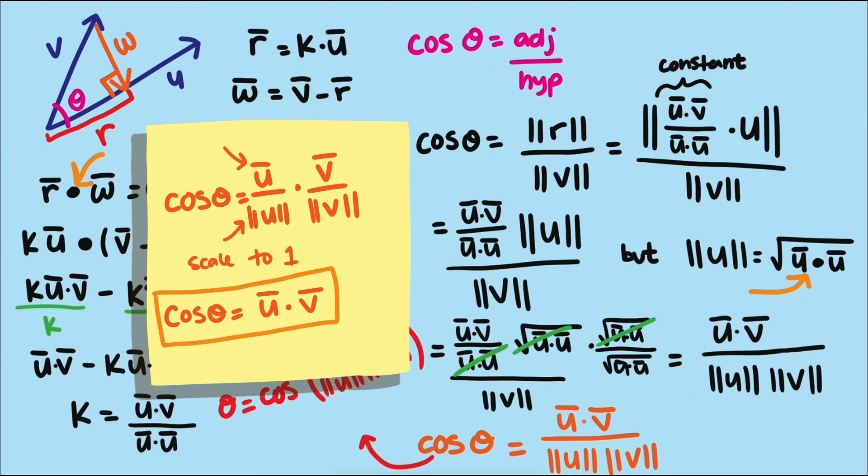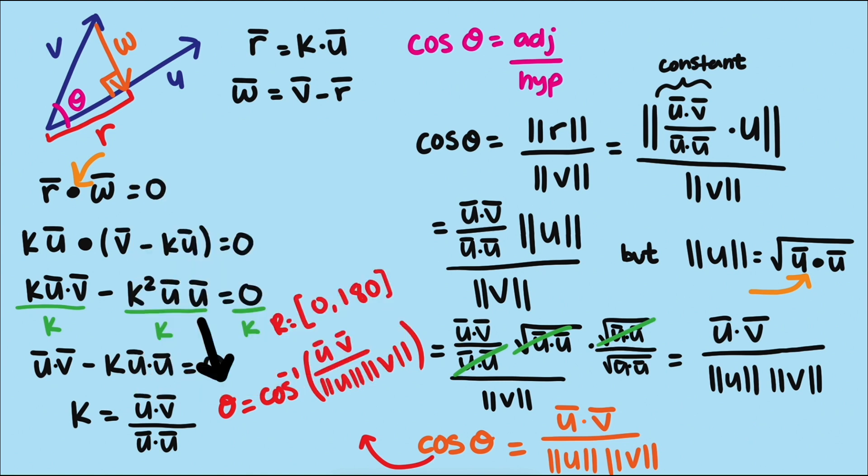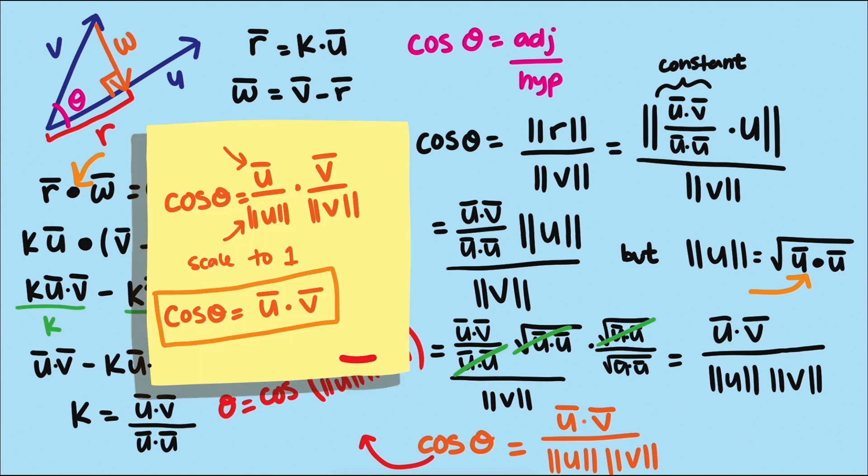This insight is what powers dating app matchmaking systems. They aren't computing angles directly, just using the dot product of normalized vectors to efficiently rank potential matches.